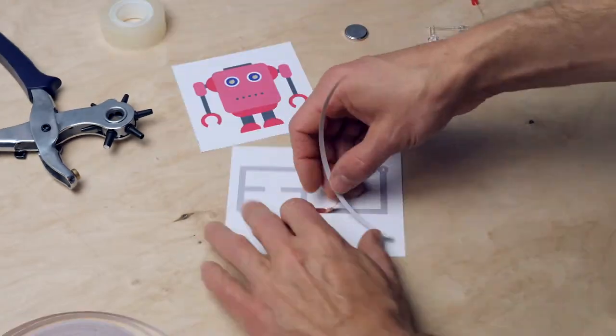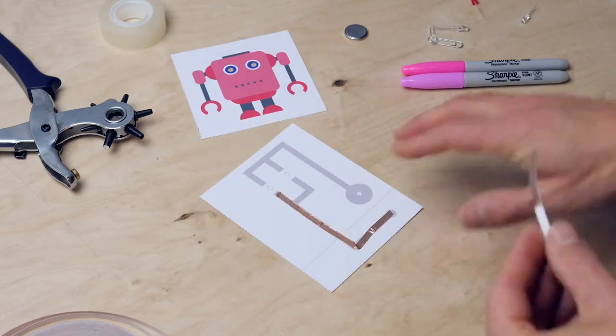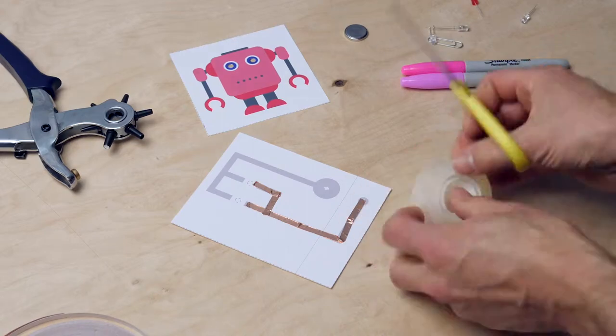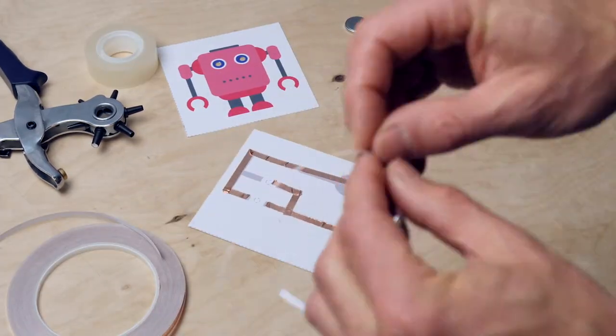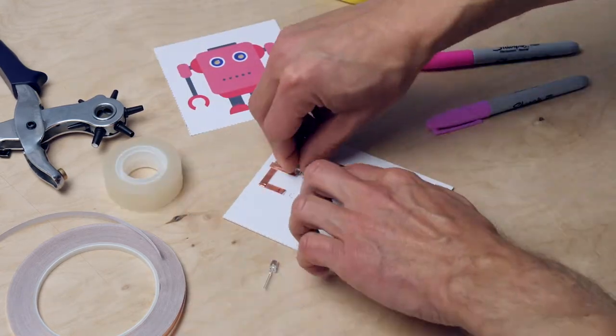First I'm going to attach the copper tape. The longest part in one piece, then the extra connection. Fold it double so that the current can easily flow through it and attach with a piece of scotch tape. Then the LEDs and the battery.